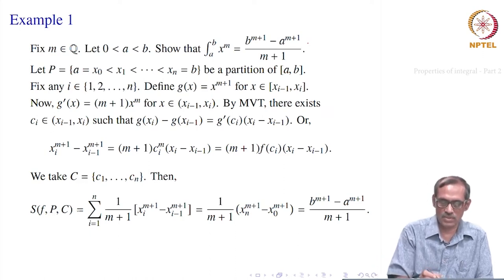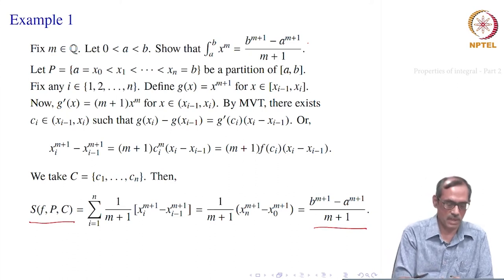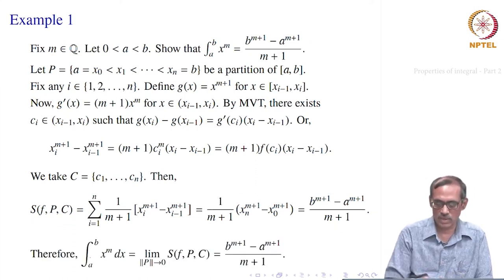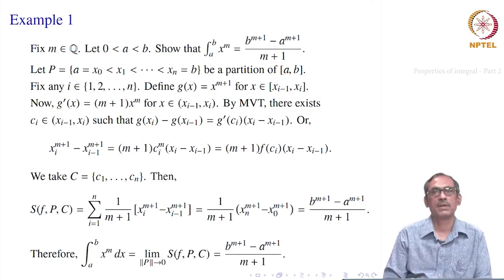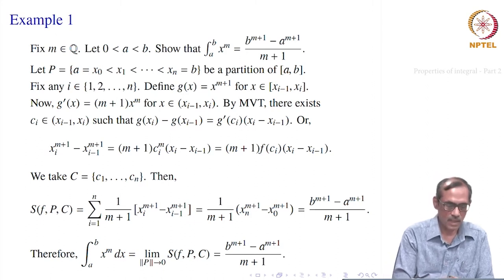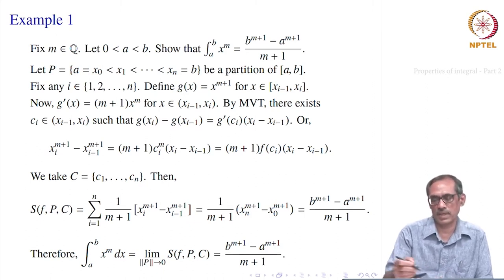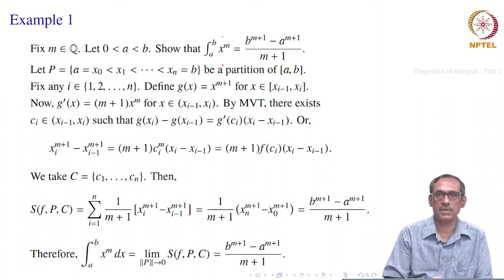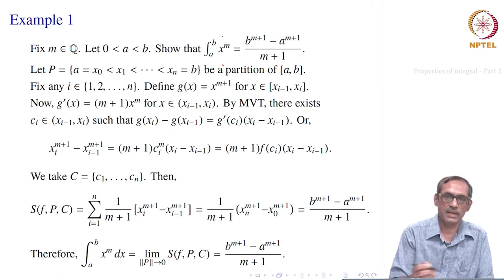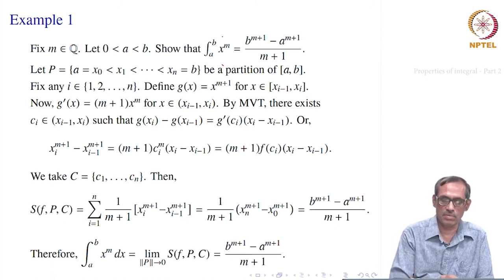For our specifically chosen choice points cᵢ, the Riemann sum itself becomes a fixed number, so in the limit the same number stays, giving the integral equal to (b^(m+1) − a^(m+1))/(m+1). This trick is helpful whenever you have a complicated function and cannot evaluate the abstract limit directly — you apply the Mean Value Theorem for differentials. Otherwise, sometimes we just get it directly from the function itself.